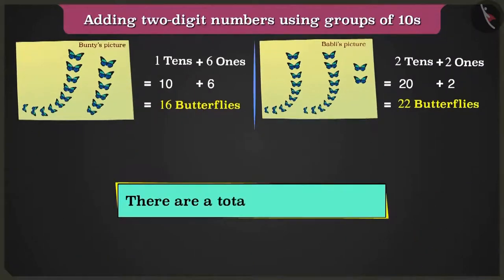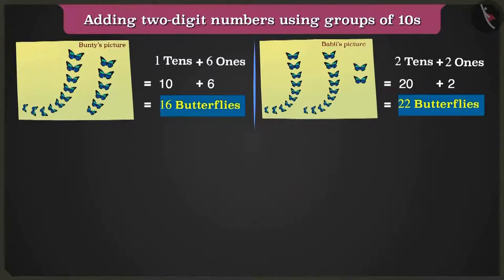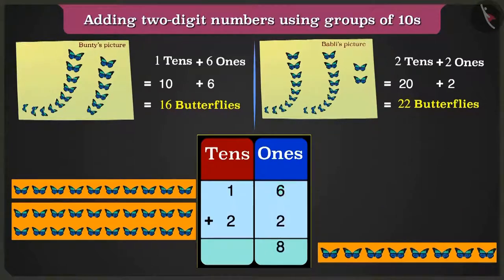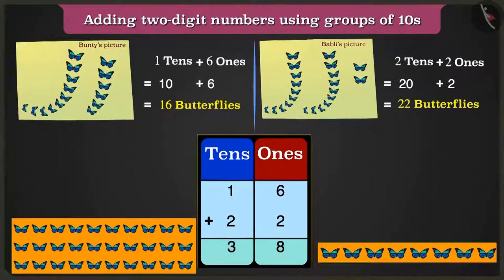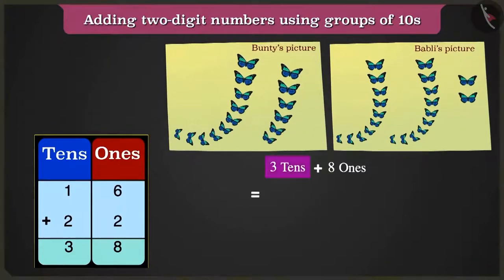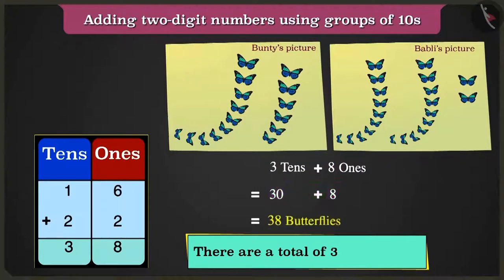To add sixteen and twenty-two, let us write these numbers in the table of tens and ones. Let us add the numbers in the ones box first. Six ones have to be added to two ones — count after six: seven and eight. So six ones plus two ones is eight ones. Write eight in the ones box. Now in the box of tens, adding one and two will make three. We will write three in the box of tens. So we have three tens that are thirty and eight ones that are eight — a total of thirty-eight butterflies.